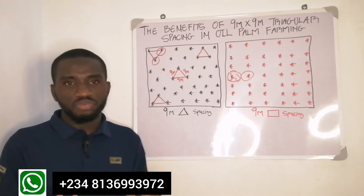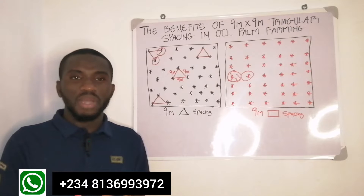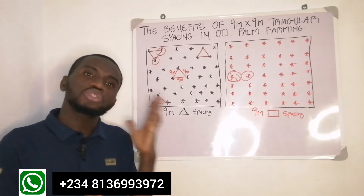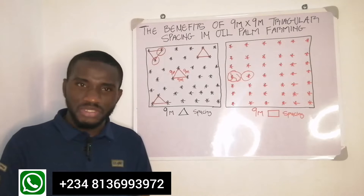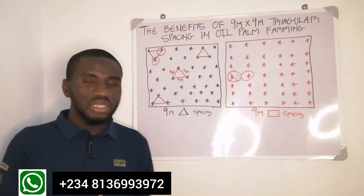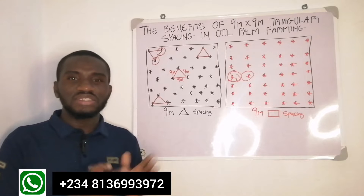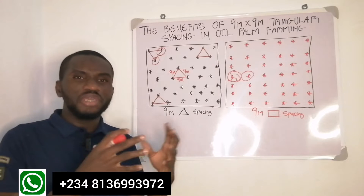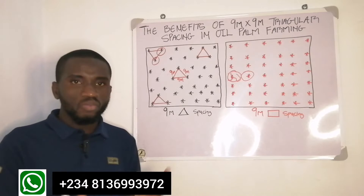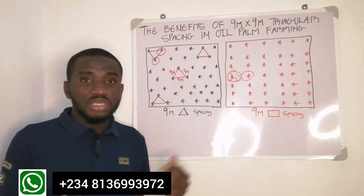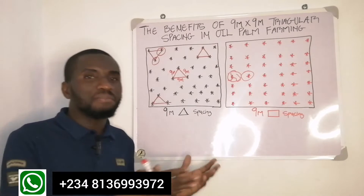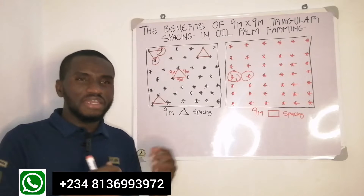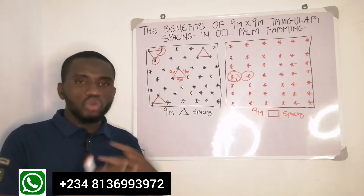This topic forms the basis for profitable oil palm farming. If you want to be successful, this is one of the fundamental things you must not mess up. There is something we call standard spacing in agriculture — each crop has its standard spacing. The reason why scientists and researchers arrived at these standard spacings is peculiar to the physiological and behavioral pattern and requirements of each crop. It has been proven over time that crops perform best at that spacing system.